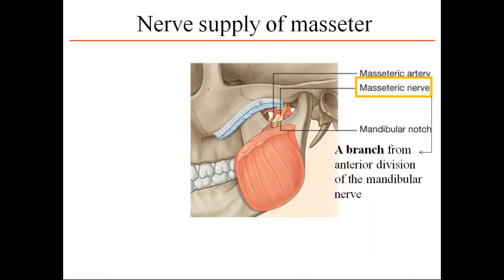The nerve supply of the masseter is from the masseteric nerve, which passes through the mandibular notch between the coronoid and condylar processes from the infratemporal fossa to the deep surface of the masseter. It is a branch from the anterior division of the mandibular nerve.